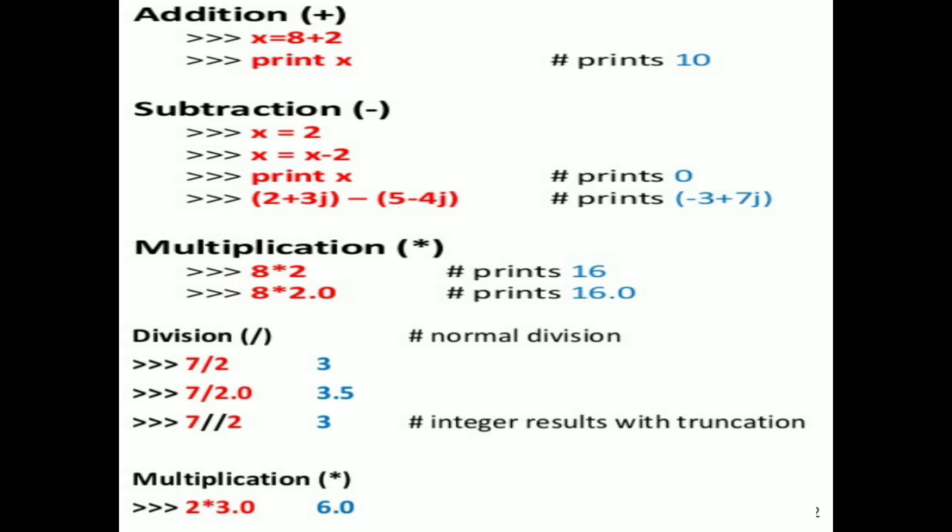Multiplication: we take two values — x = 8 * 2. The star (*) symbol represents multiplication. 8 multiplied by 2 gives 16, so print x gives 16. With floating-point values 8.0 * 2.0, the result is 16.0.